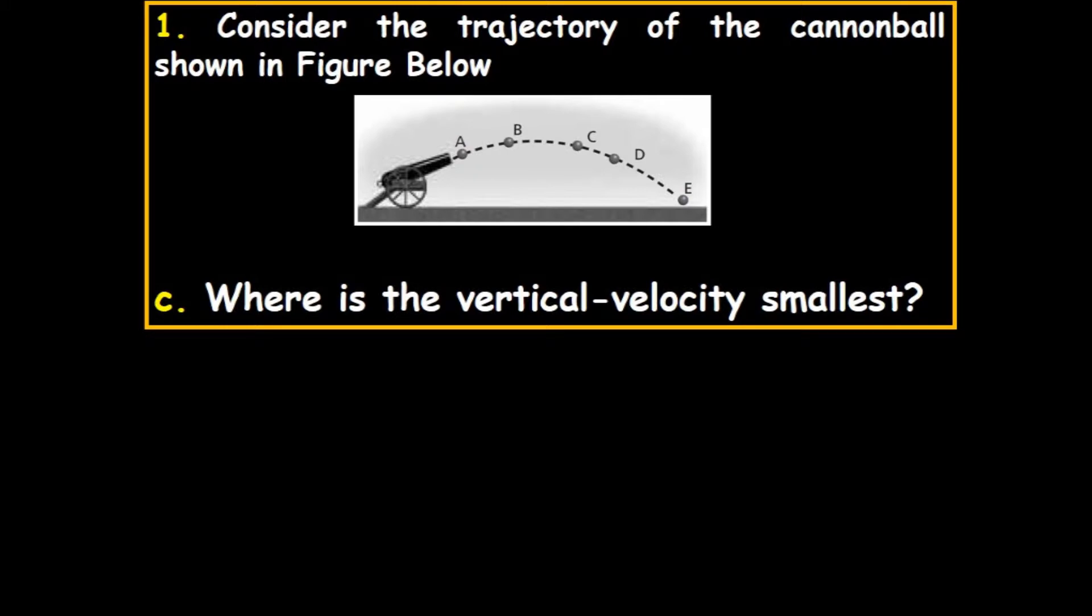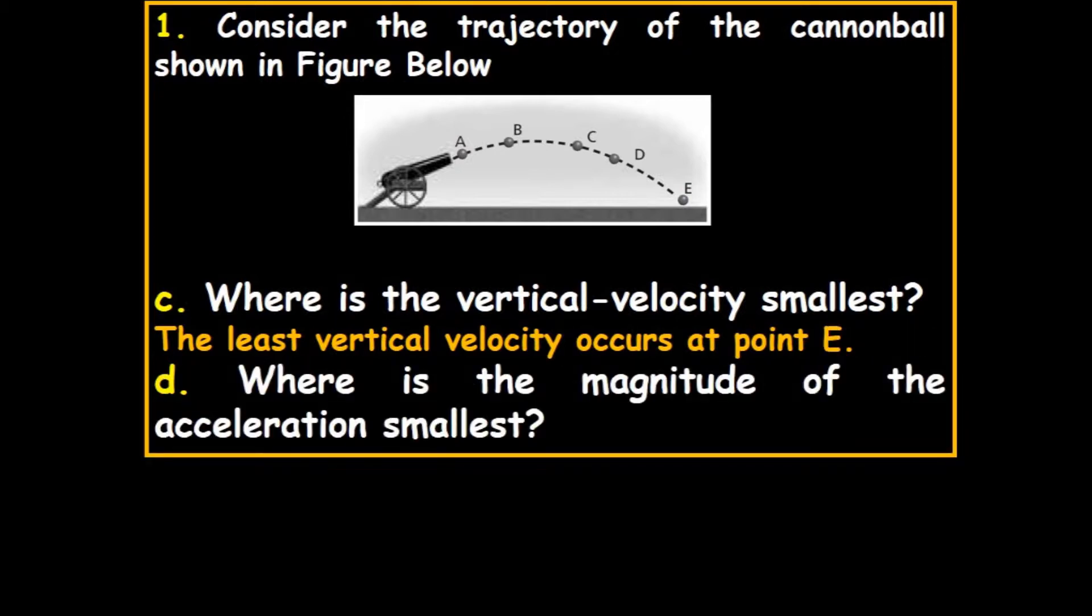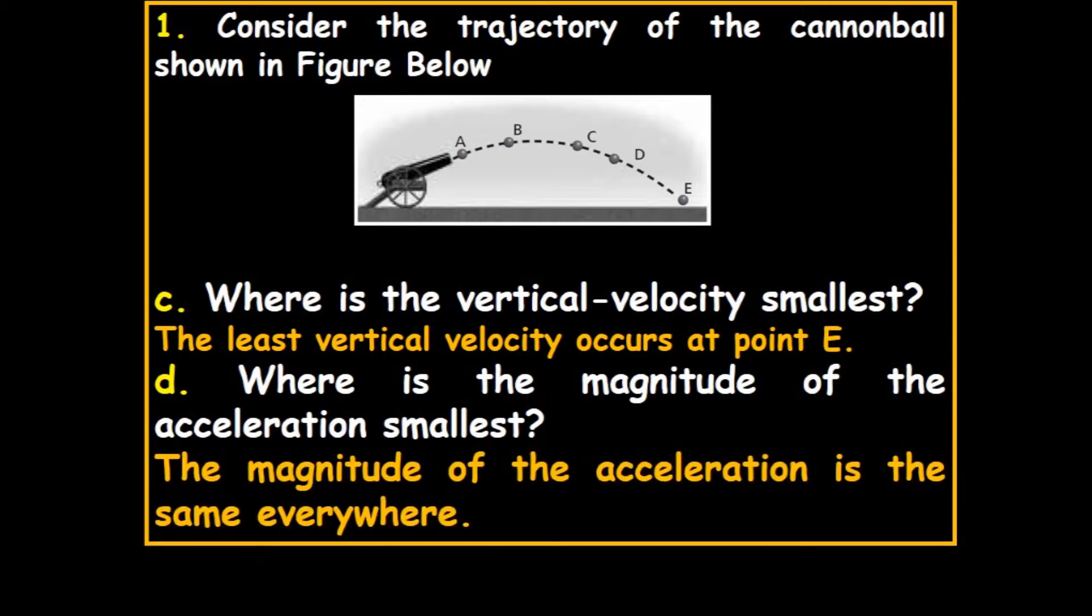Where is the vertical velocity smallest? Just beyond point B. The least vertical velocity occurs just after point B. Where is the magnitude of the acceleration smallest? The acceleration is constant, it's 10 meters per second squared everywhere, as long as you're on earth. The magnitude of the acceleration is the same everywhere.